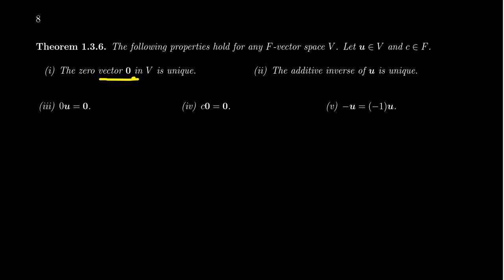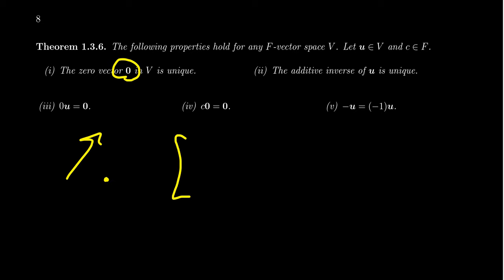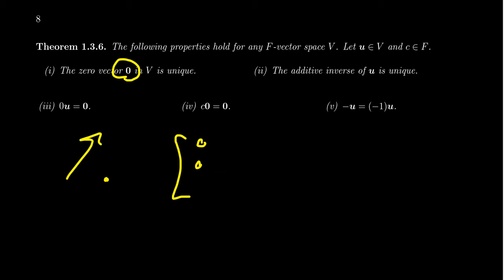First of all, the zero vector is unique. There's only one vector in the vector space that acts like the zero vector. Sometimes we get a little ahead of ourselves when we think of the zero vector. In the arrow interpretation, the zero vector is just a point. For column vectors, it's the array of all zeros. For linear equations, it's the zero equation zero equals zero. Could there be some foreign species of vector spaces for which there are multiple vectors that act like the zero vector? The answer is no.